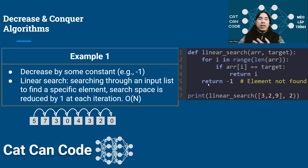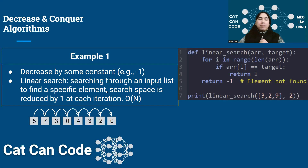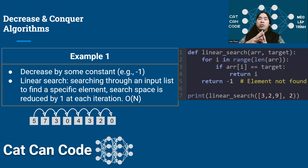You can see the decrease and conquer strategy right here. After each iteration of the for loop, my search space is reduced by one — decreased by a constant, in this case one element. The complexity of this algorithm is O(n) because it goes through all the elements of the array, and at each iteration it reduces the problem size by one. So to reach zero, it needs to go through all n items. That's the first example.